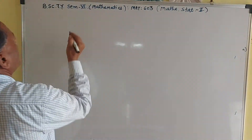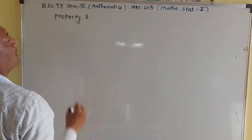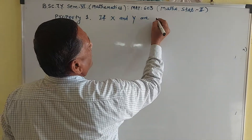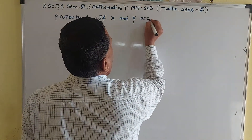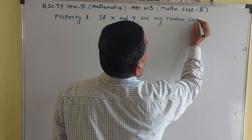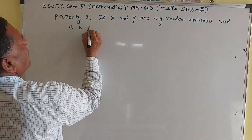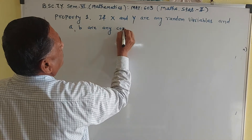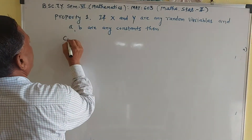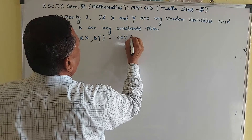Now, property of covariance — property first. If capital X and capital Y are any random variables, and small a and small b are any constants, then you have to prove that Cov(aX, bY) is equal to ab times Cov(X,Y).